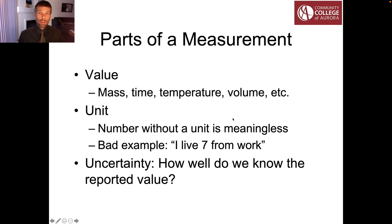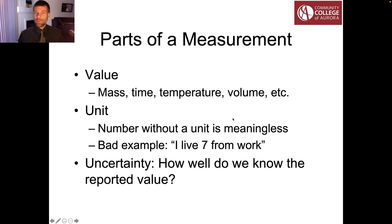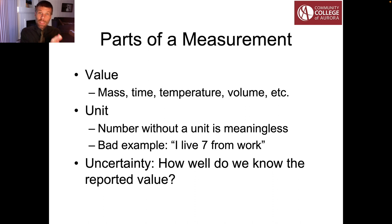If you are reading a scientific paper or something in the popular literature, any really good measurement of scientific data is going to include a value — a number that tells you the instrument reported a value of 17. But in the absence of any additional information, that number 17 is pretty useless. So we have to connect it to a unit. If we connect our experiment to a digital multimeter and get a result that says 17 volts, now we have a number and a unit.